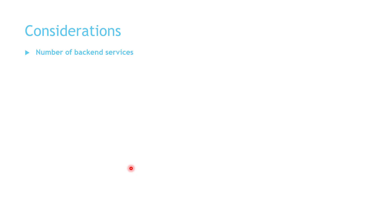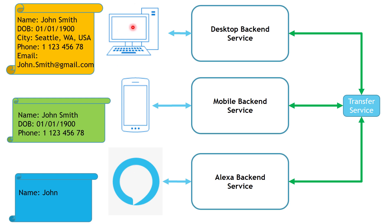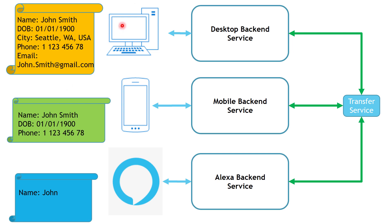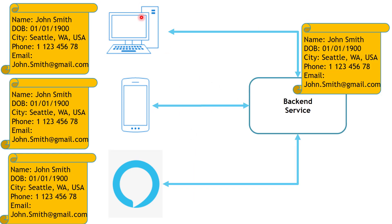Now let's talk about some considerations to keep in mind when using this pattern. First, the number of backend services — you need to be clear about how many frontends need to be supported, and that will tell you how many backend services you need to implement. Also, you need to decide whether to implement a backend for each frontend or a single backend for all frontends. As we've seen, when each frontend displays different amounts of information, it makes sense to have a separate backend per frontend. However, if all frontends display the same information — the full user profile — then a single backend service consumed by all frontends makes more sense.